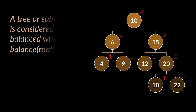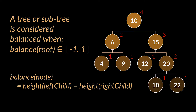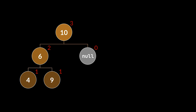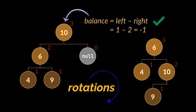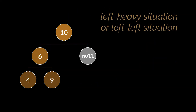A tree or subtree is considered balanced when the balance of its root node is between -1 and 1. The balance of a node is the difference between the heights of its left and right children. For example, node 10 has a left subtree root of height 2 and a right node of height 0 (null), giving a balance of 2 minus 0 equals 2. These nodes need to be rearranged using rotations.